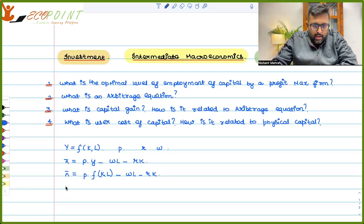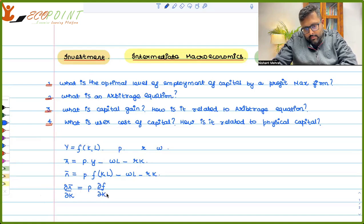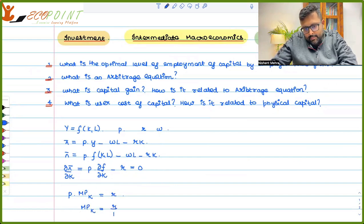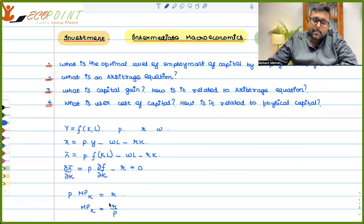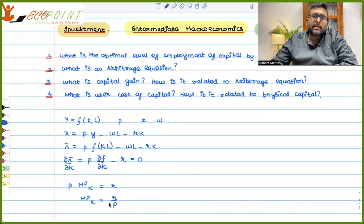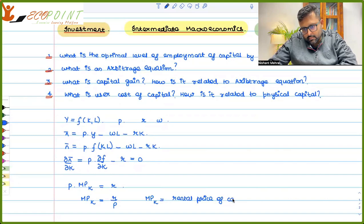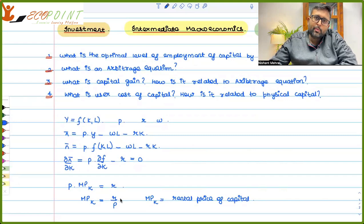Now we have to determine how much capital should there be so that profit is maximized. So I will differentiate this with respect to K. P times del f by del k minus R equals zero. Del f by del k is marginal product of capital, and this equals R. So MPK equals R by P.